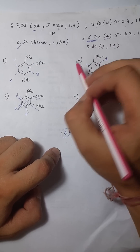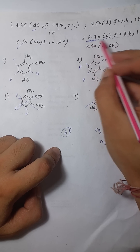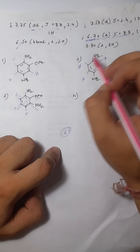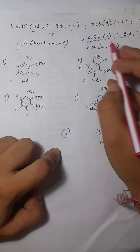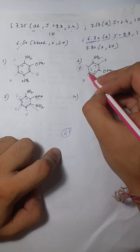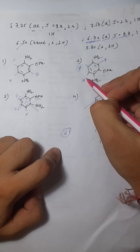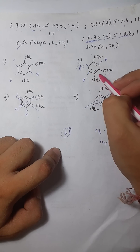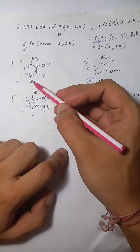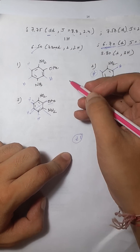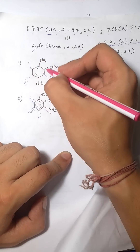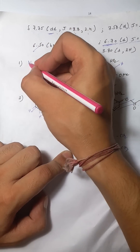For delta 6.7 doublet with J = 8.8, that means it's undergoing ortho coupling and no meta coupling. In one structure, one hydrogen undergoes both ortho and meta coupling, so it can't be the 6.7 doublet. The hydrogen undergoing only ortho coupling with no meta neighbor fits delta 6.7. Similarly in the other compound, the hydrogen undergoing ortho coupling but no meta coupling is assigned to 6.7.